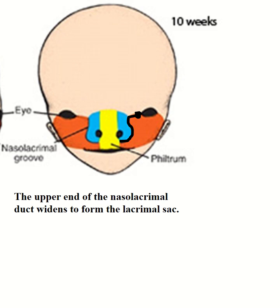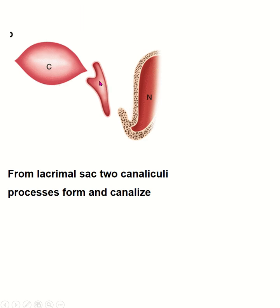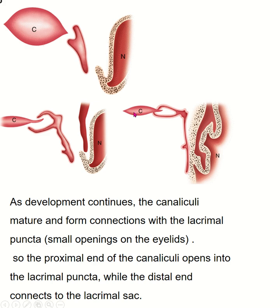The development of the nasolacrimal duct and its opening into the inferior meatus is a result of the embryological fusion of the lateral nasal and maxillary prominences. The lacrimal sac and nasolacrimal duct arise from the same epithelial tissue that contributes to the formation of the lateral nasal cavity, so it drains into the inferior meatus. Regarding the lacrimal sac: the upper end of the nasolacrimal duct widens to form the lacrimal sac. For the lacrimal canaliculi: from the lacrimal sac, canaliculi processes form and canalize, and as development progresses the canaliculi mature and form connections with the lacrimal puncta, a small opening on the eyelids. The proximal end of the canaliculi opens into the lacrimal sac, connecting the conjunctival sac to the lacrimal sac.